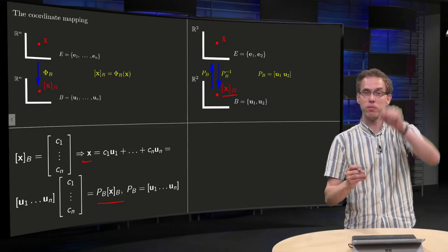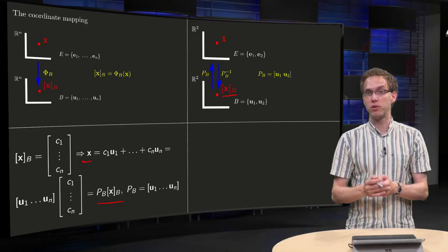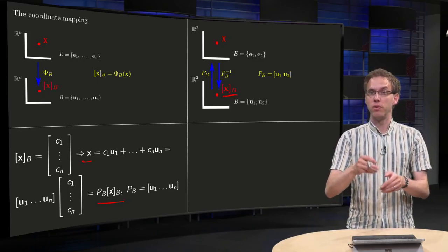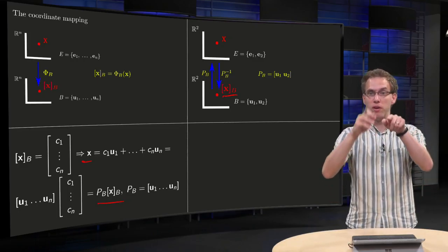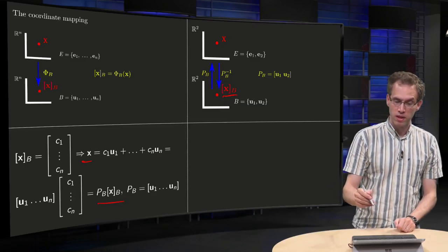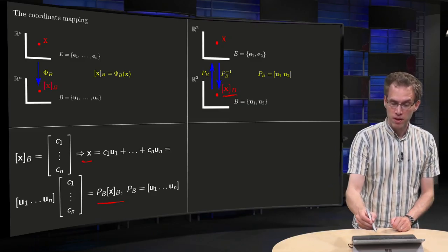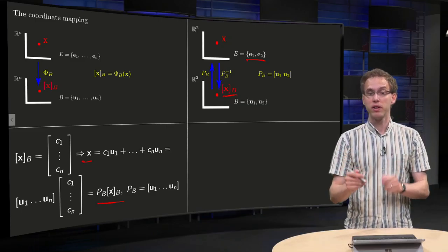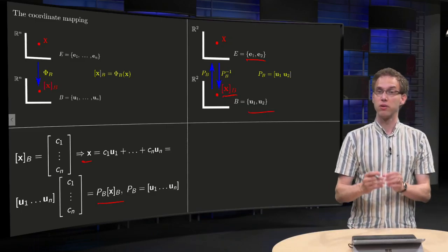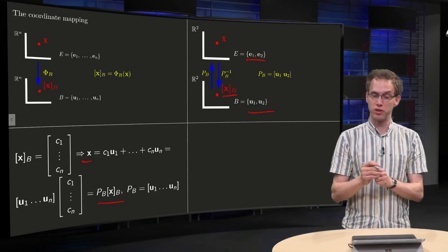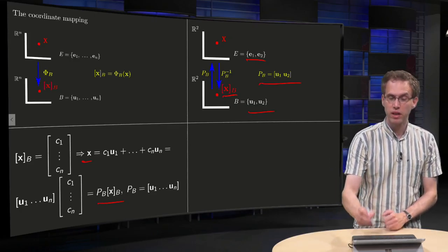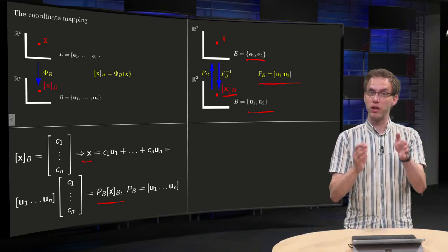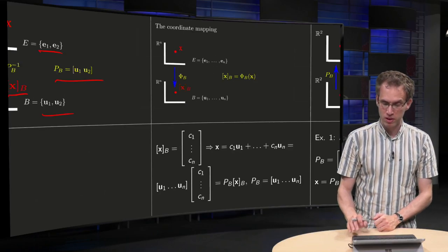So that's how we go from down to up, and if you want to go down then you have to go the other way, so instead of PB you have to use PB inverse. So in the R2 setting we have E just containing [1,0] and [0,1], and our B can contain two arbitrary vectors in R2, and our PB is just a 2×2 matrix containing u1 and u2. So let's take a look at an example.